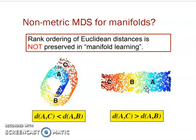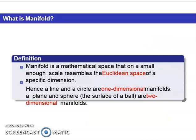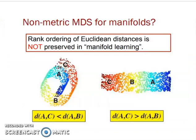It is a non-metric MDS on a manifold. A manifold is a mathematical space that on a small enough scale resembles the Euclidean space of a specific dimension. Hence, a line or circle are one-dimensional manifolds, and a plane or sphere are two-dimensional manifolds.